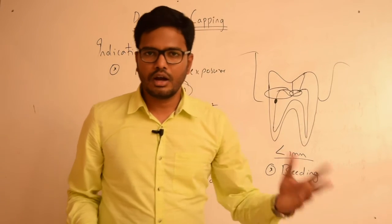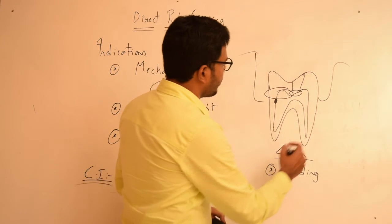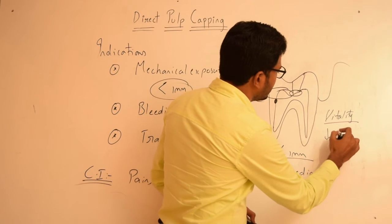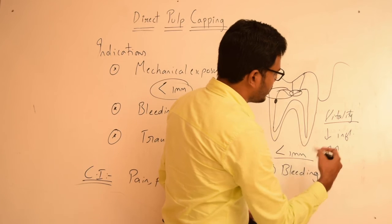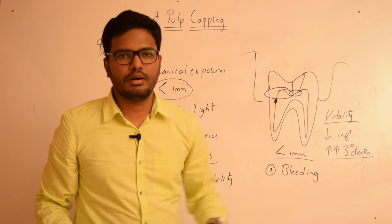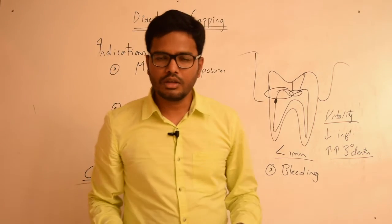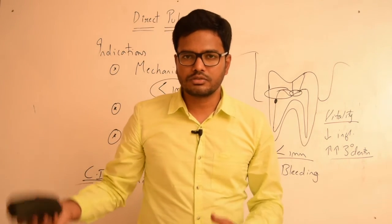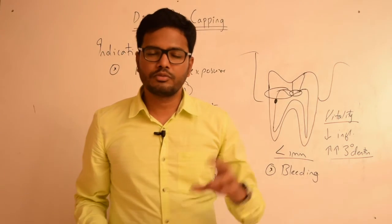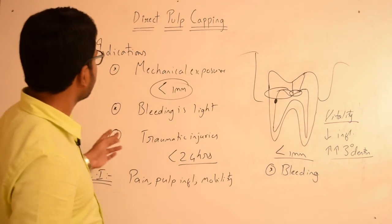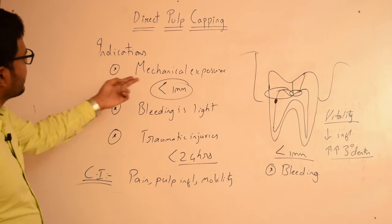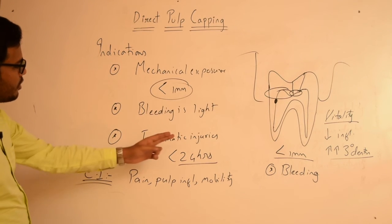The objectives of direct pulp capping are similar to indirect pulp capping: to maintain vitality, to minimize inflammation of the pulp, and to allow deposition of tertiary dentin. Direct pulp capping is considered a success when there is no post-treatment continuation of symptoms like pain or inflammation, and when there is reduced inflammation with deposition of tertiary dentin as observed radiographically. To summarize, direct pulp capping is a procedure where we directly place a biocompatible material such as calcium hydroxide over an exposed site.